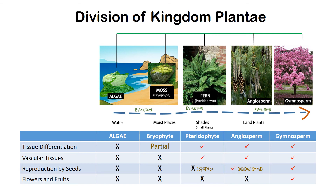So based on the habitat, the plants evolved from algae to mosses to ferns to Angiosperms and Gymnosperms. And these are some of the key characteristics which help us to differentiate these various divisions in the kingdom Plantae. I hope you found it useful. Thanks for watching.